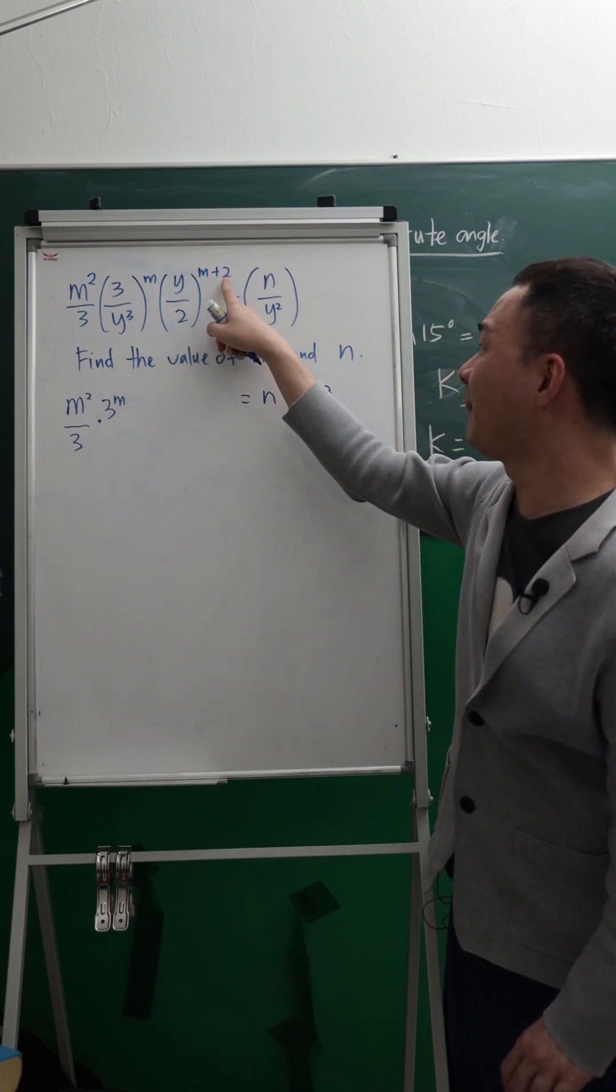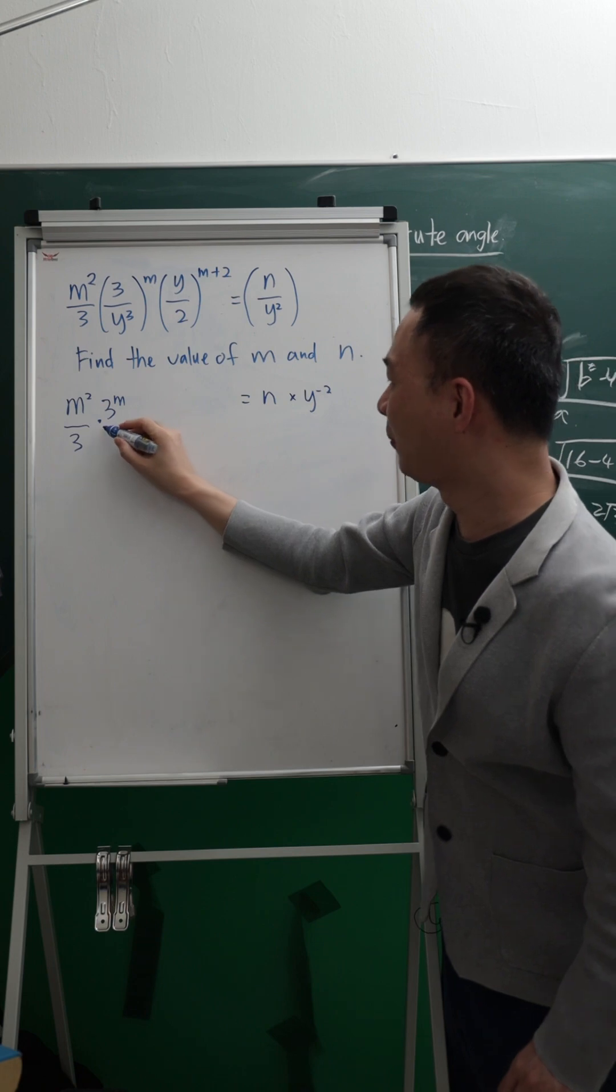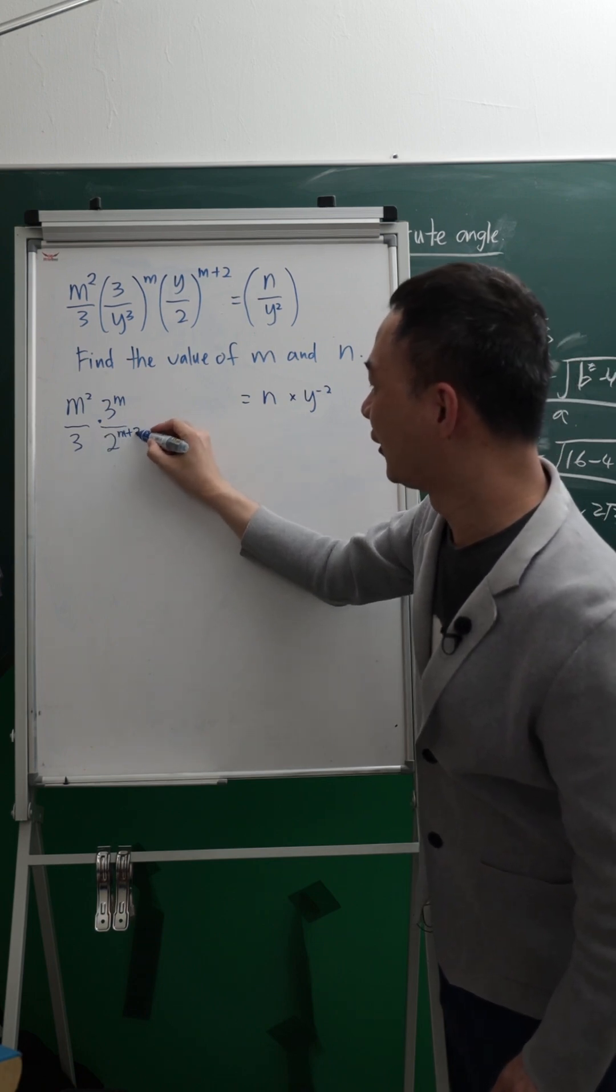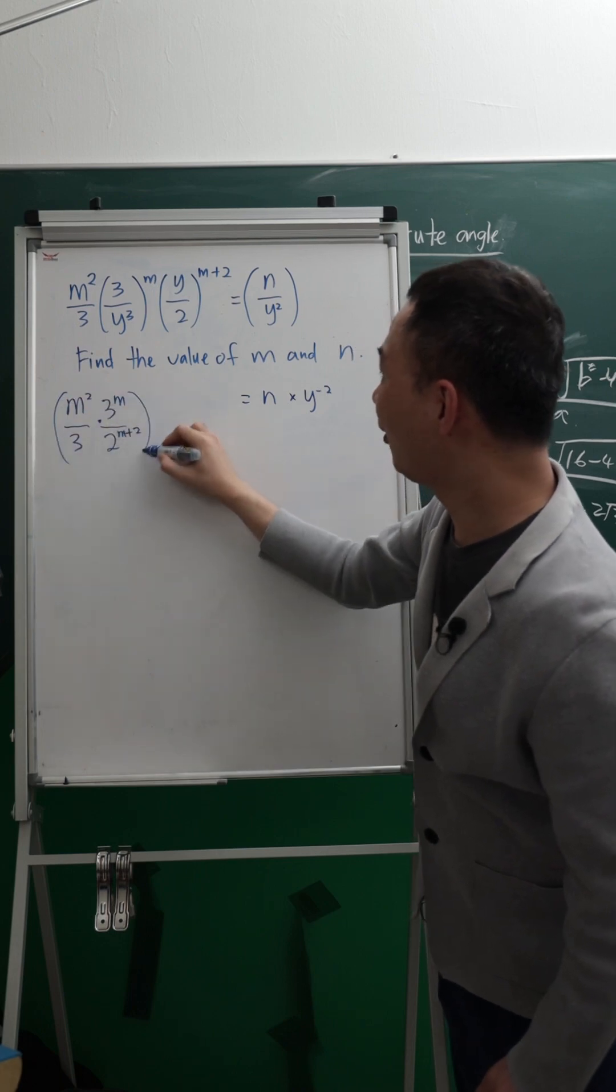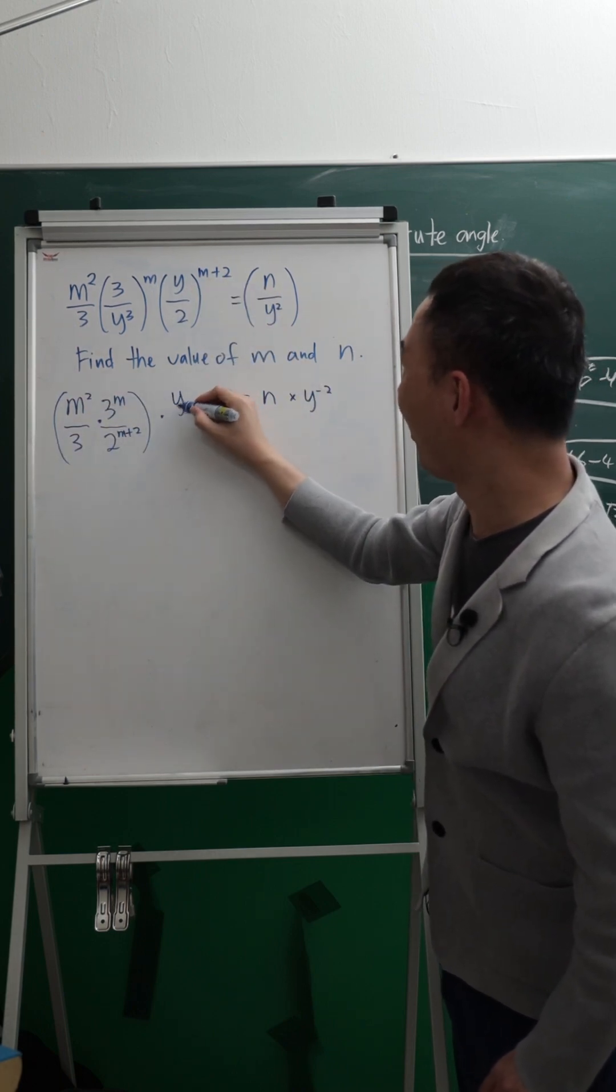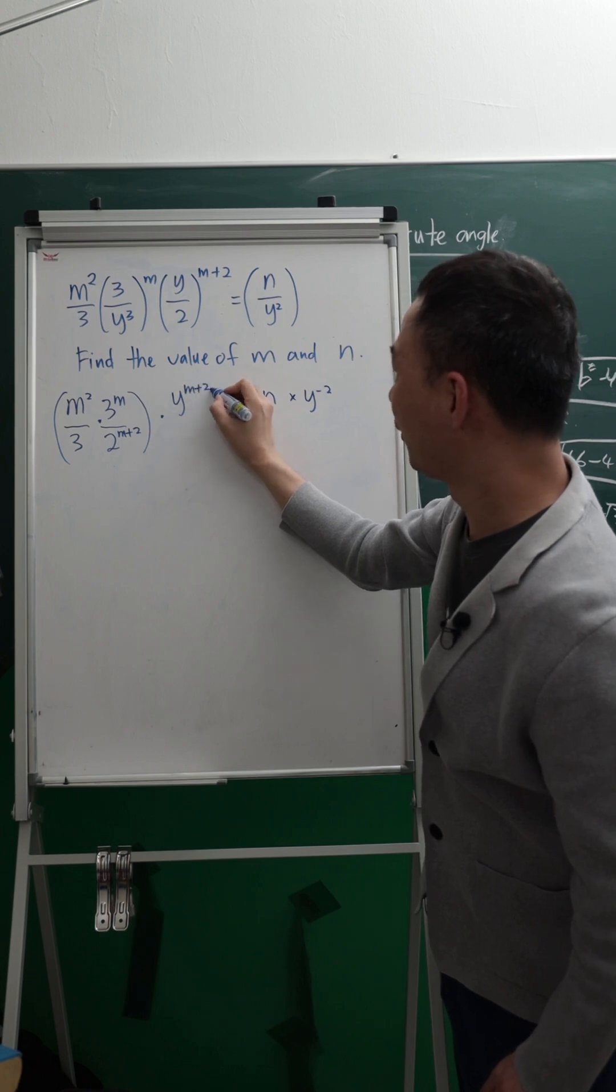So I have 2 power of M plus 2. I will put over here: 2 power of M plus 2. Then over here just now, we have Y power of multiply Y power of M plus 2.